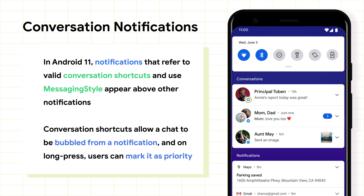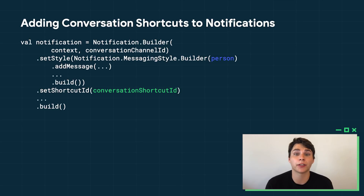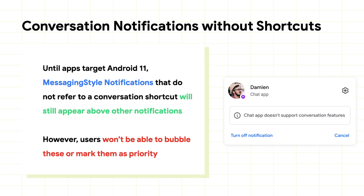Priority conversations will also break through do not disturb mode and bubble by default. Adding the conversation shortcut to your messaging style notification is very easy now that you've done all the hard work to define the shortcut. Just set the shortcut ID from the conversation shortcut you defined previously. You should also be able to reuse the Person object from before when constructing your messaging style notification. And that's it — once you publish this notification, it will appear in the conversation section. We want to make the migration to Android 11's new conversation section as smooth as possible. Because many apps already publish messaging style notifications, these will still appear in the conversation section above other notifications until these apps target Android 11. However, users won't be able to bubble these for multitasking and they won't be able to mark them as priority conversations when they long press on the notification. Instead, we will provide an educational tip for the user.